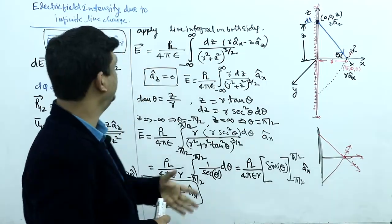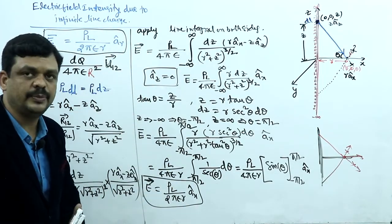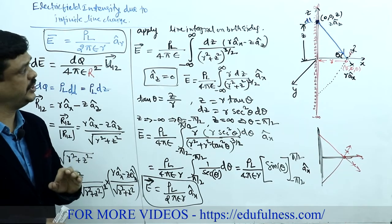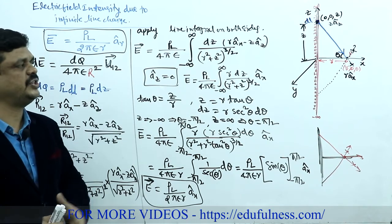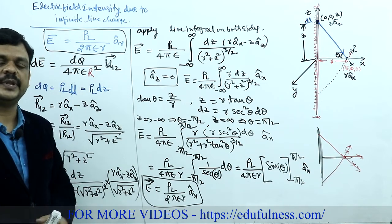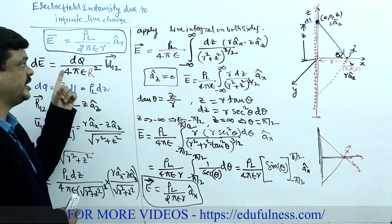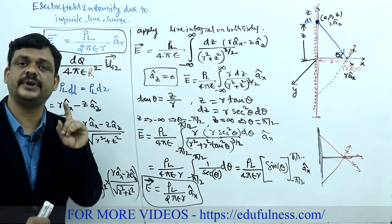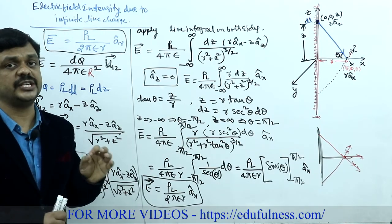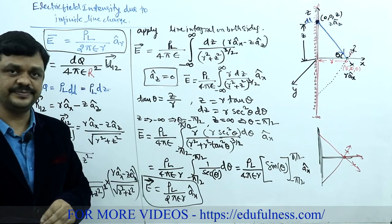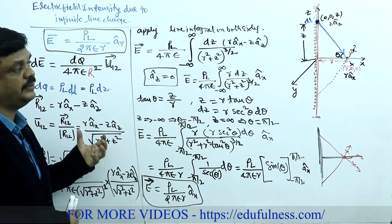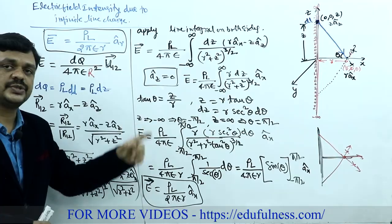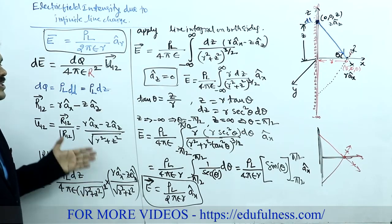The unit vector direction is ax because the point was assumed on the x-axis. If the point is on the y-axis, the direction becomes ay. The general direction is ar, depending on the point's position. This completes the derivation using Coulomb's law. Similarly, this expression can be derived using Gauss's law, where we use the equation ∮D·ds = Q_enclosed.